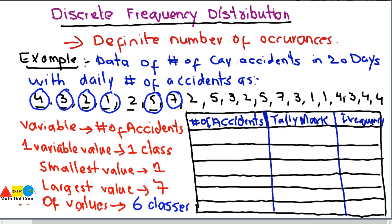Since there are 6 classes, we make 6 rows in the frequency distribution table. The table has three columns: number of accidents, tally marks, and frequency. We start writing the six different classes from the smallest value — 1, then 2, then 3, then 4, then 5, and then 7.